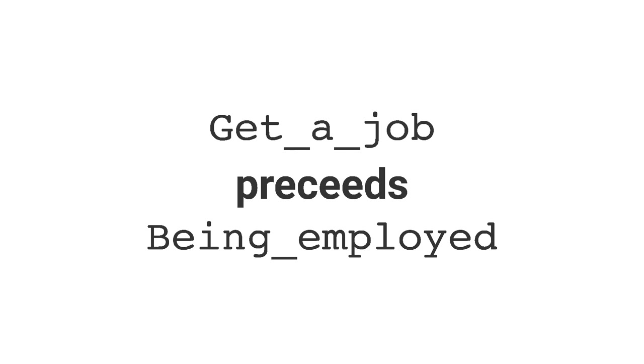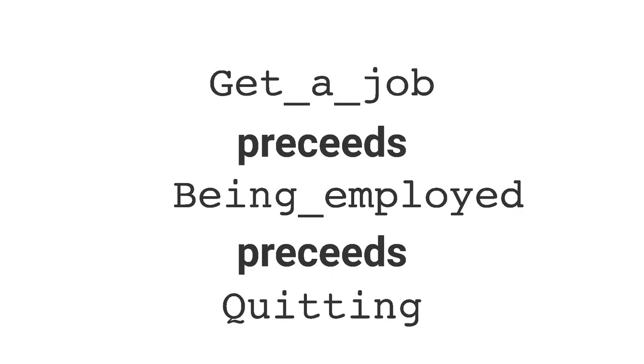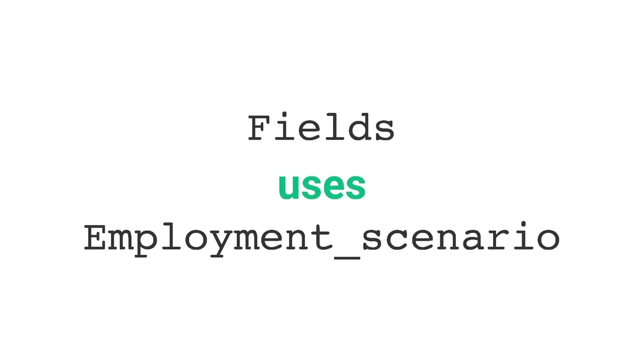Additionally, those frames tend to follow a chronological order. First, someone gets a job. Then, this person spends some time being employed, and finally quits. Frames from other domains can also be brought into play. This is the case of 'fields,' a frame that groups all uses indicating areas, sectors, or industries where people can work.